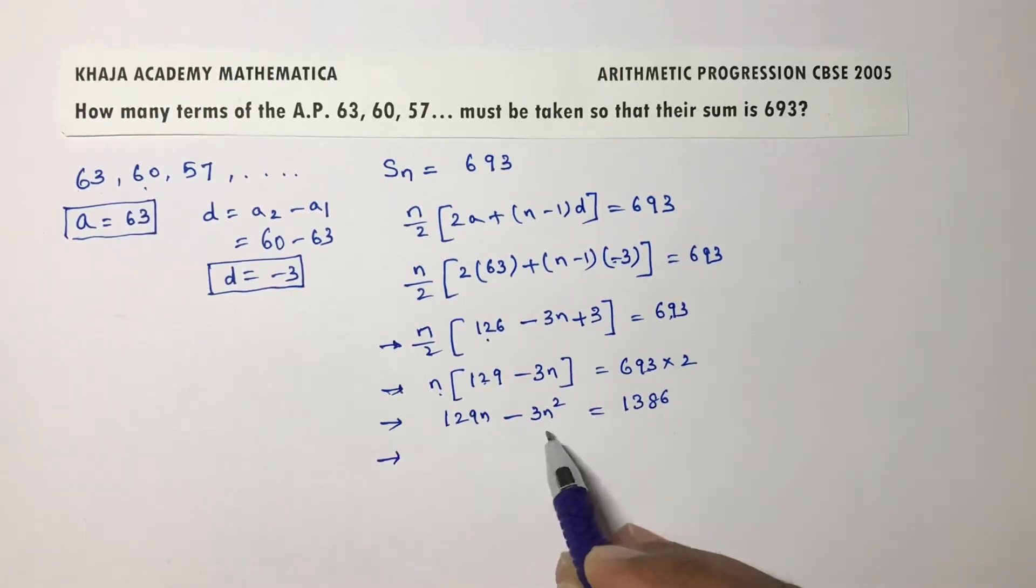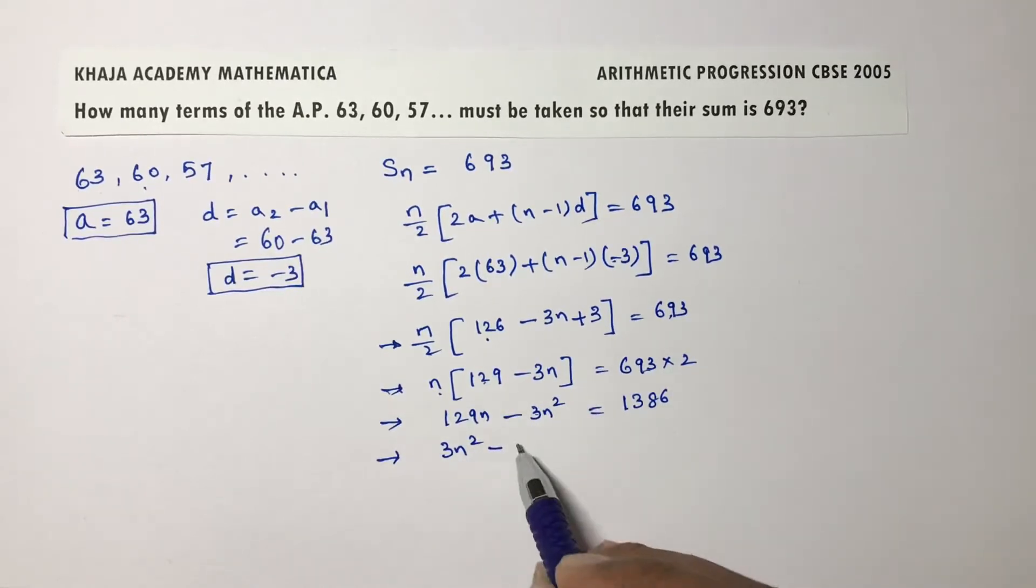If you write in standard form, 3n square. First n square and it is positive. So I am taking these two terms towards right side. 3n square, this plus 129 will become minus 129n plus 1386 equals 0.